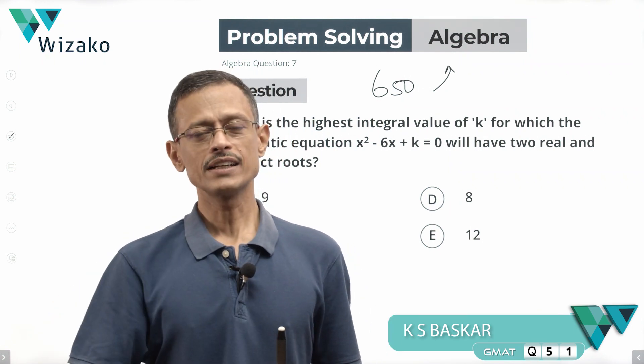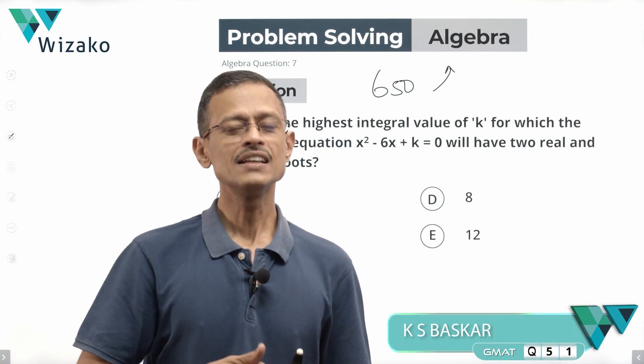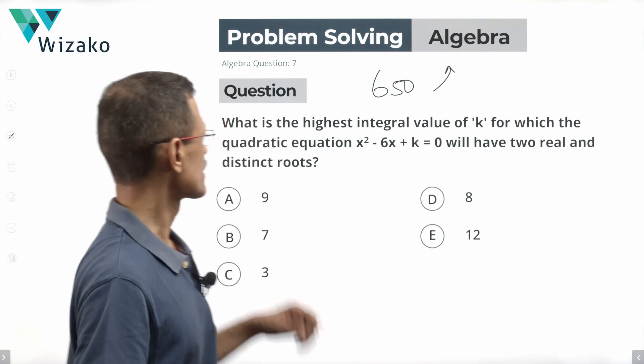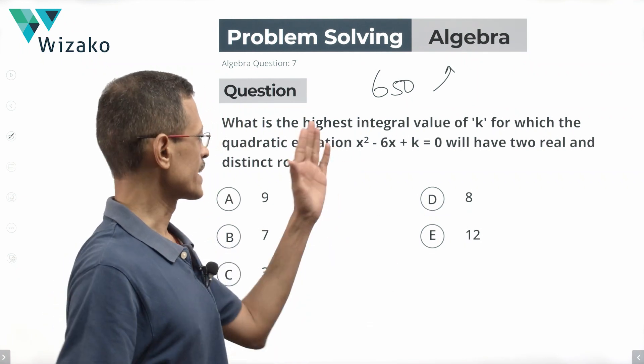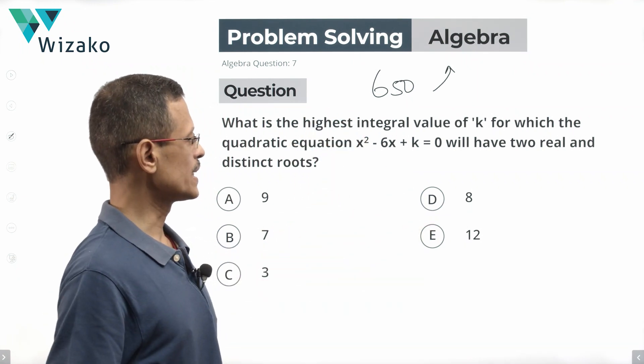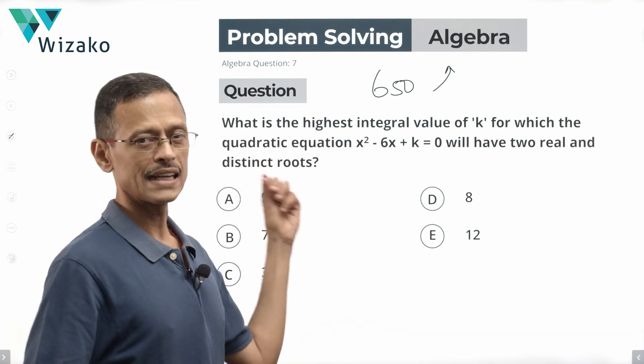So let's quickly run through the theory about the nature of roots of a quadratic equation and then round this question up. The question is, what is the highest integral value of k for which the quadratic equation x² minus 6x plus k equals 0 will have two real and distinct roots?